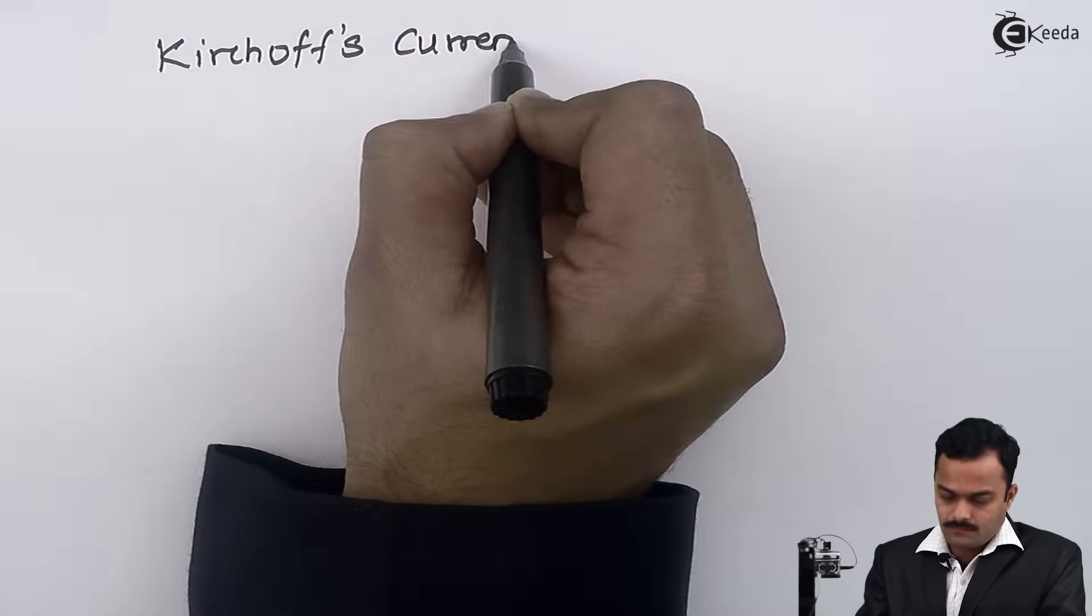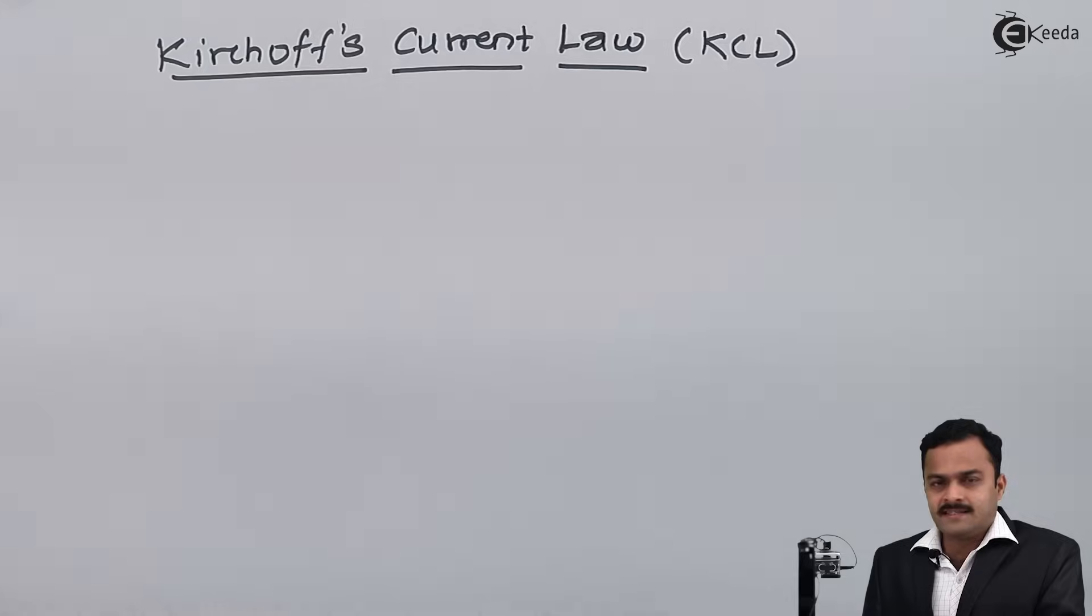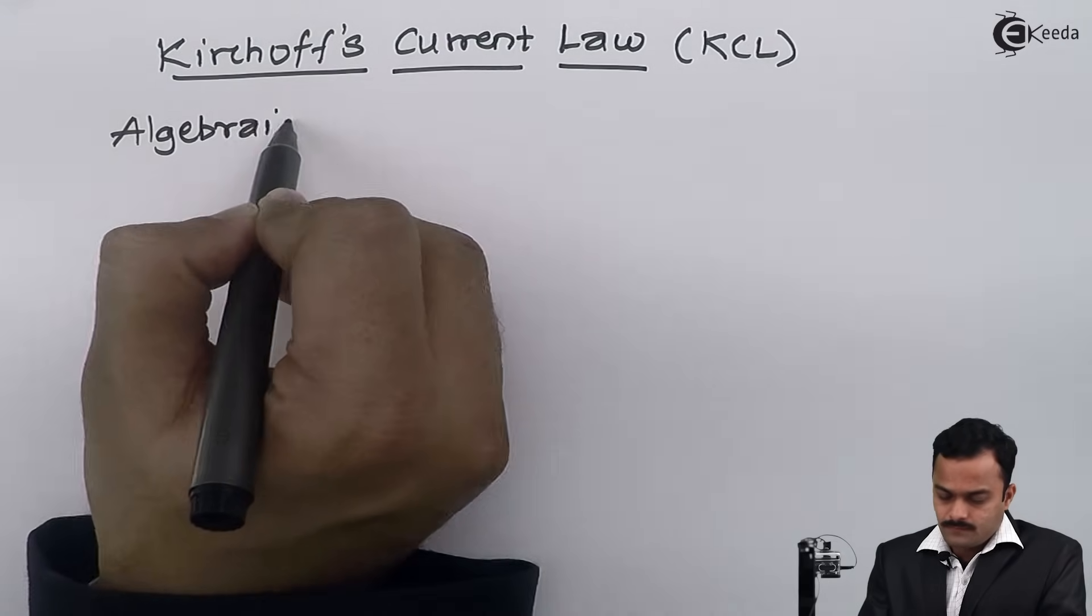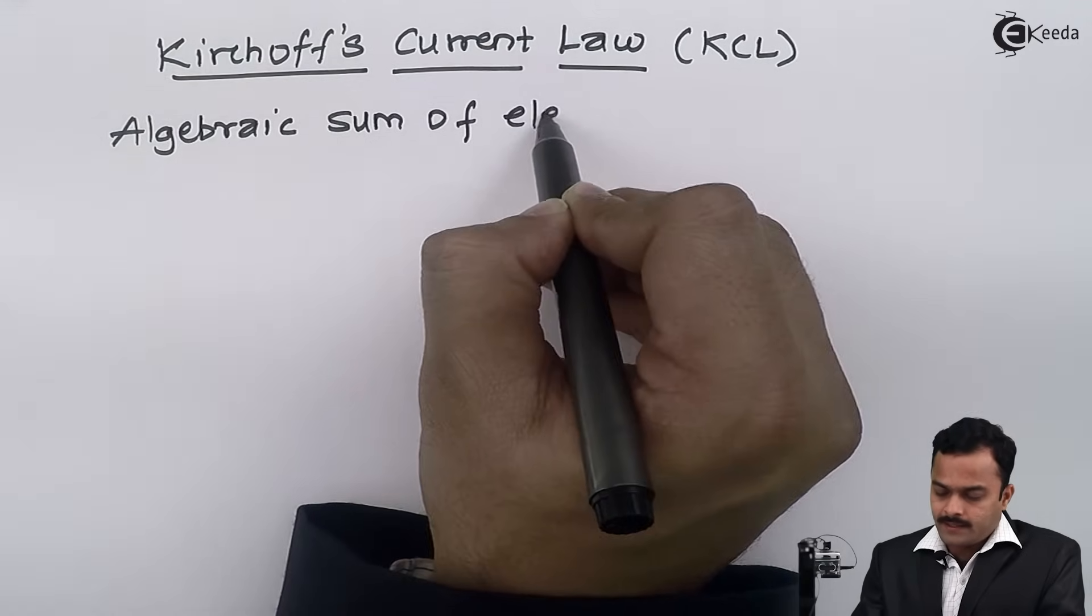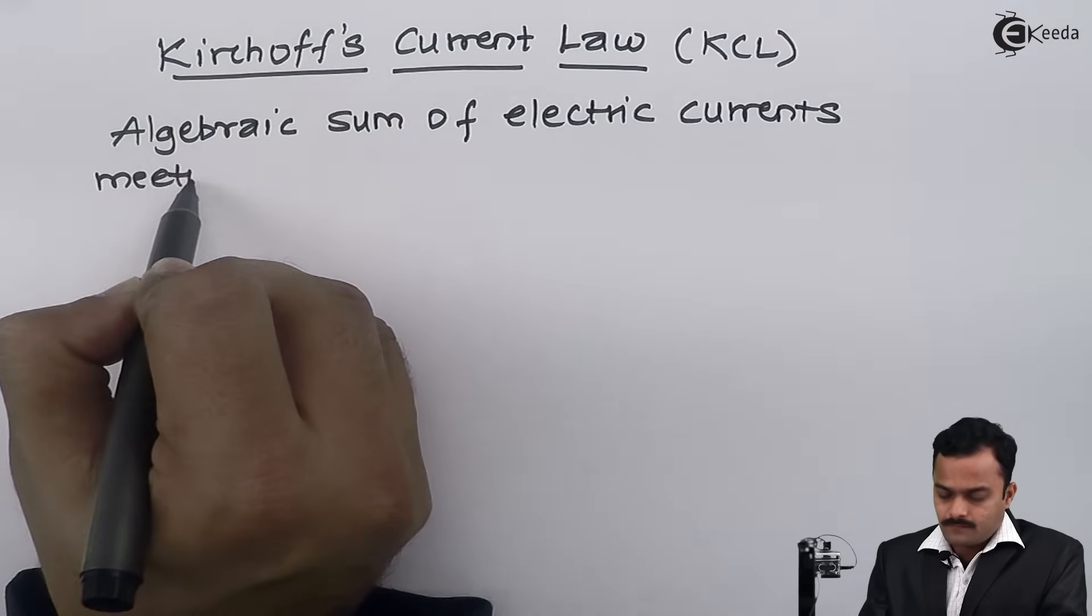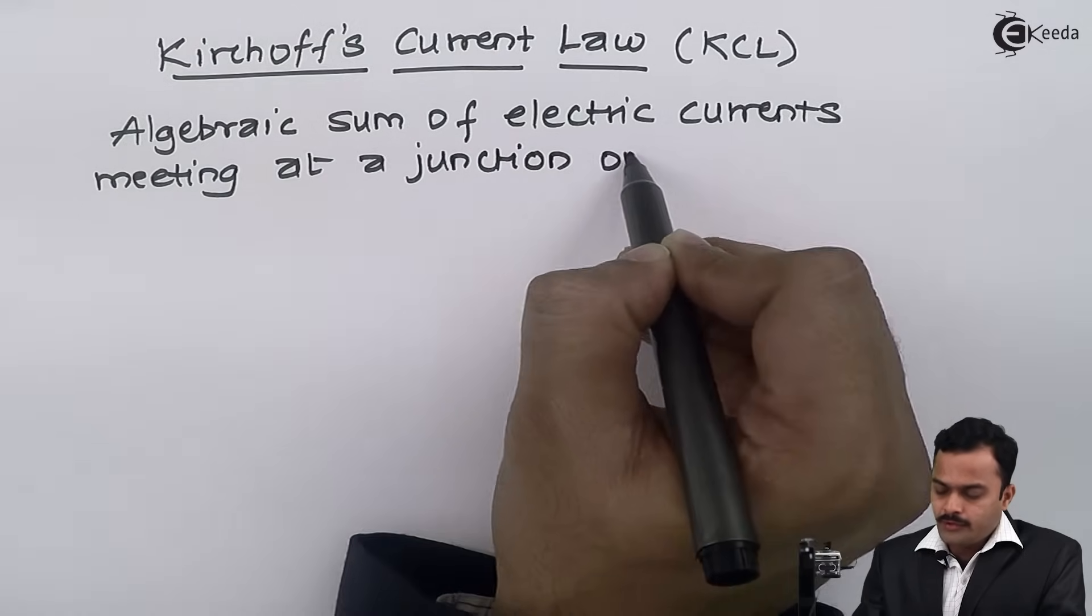Hi friends, in this video we are going to see the most fundamental law in electric circuit, and that is Kirchhoff's current law, also known as KCL. The law states: the algebraic sum of all electric currents meeting at a junction or a node is equal to zero.